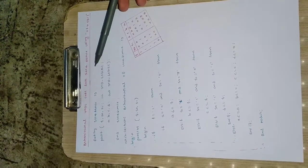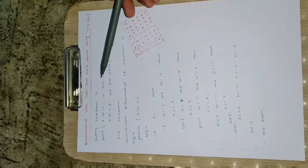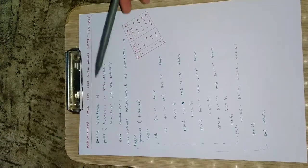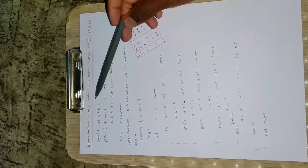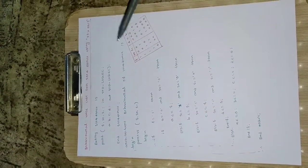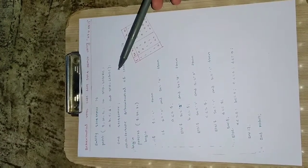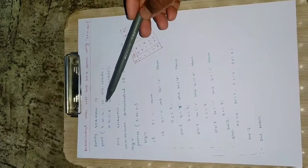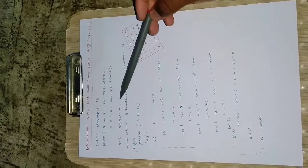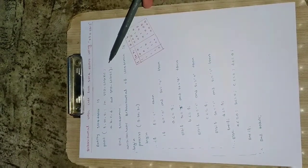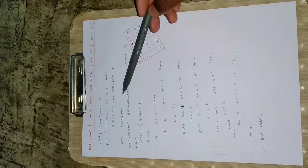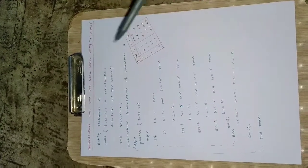First, I will define the entity. So: entity one_to_four_DMUX is — the name of this entity is 1-to-4 DMUX, and you can give any name you want. Then we define the input and output ports. Port F, S0, S1 are the inputs in standard logic. And A, B, C, D are the outputs, also in standard logic but declared as out. Then close the bracket, put a semicolon, and end the 1-to-4 DMUX entity.